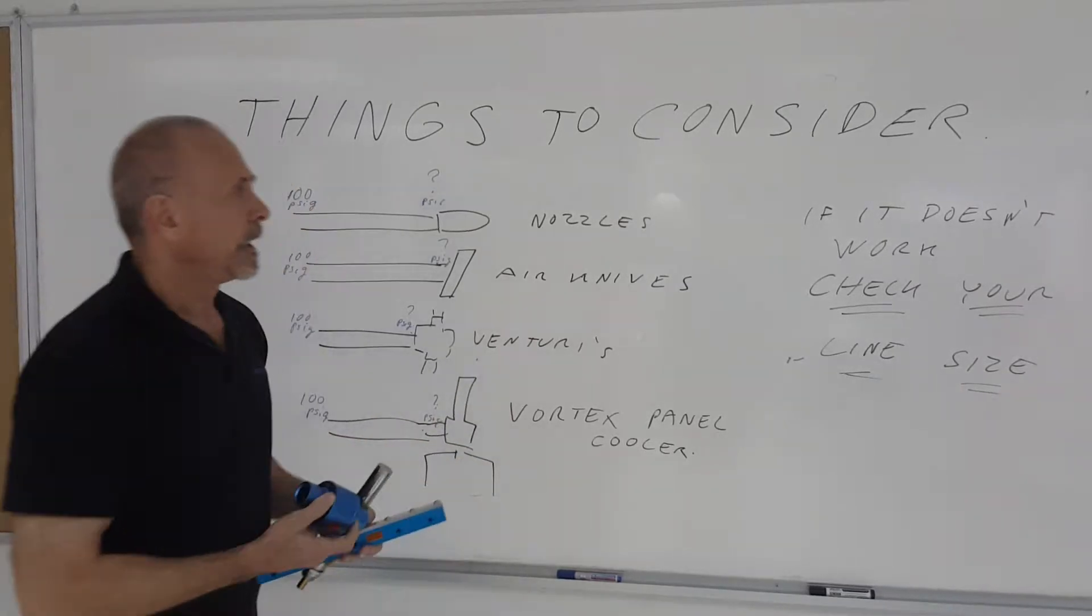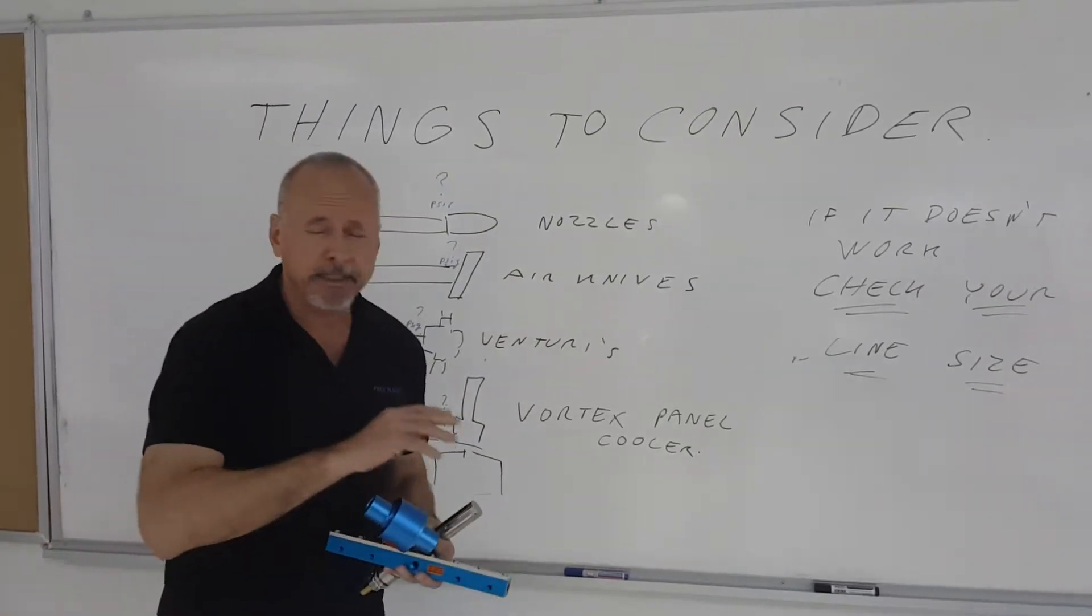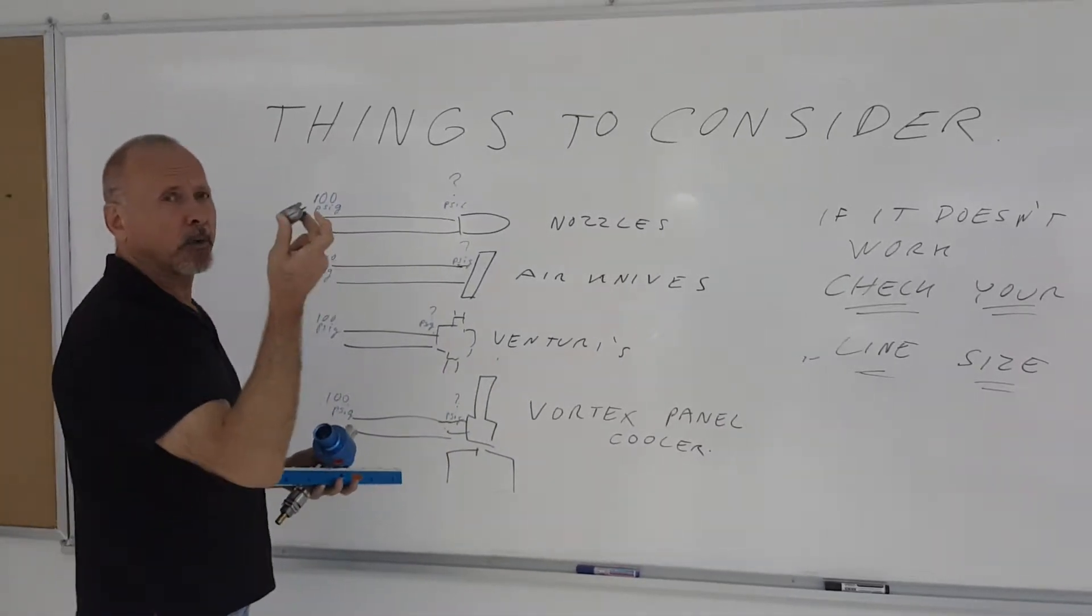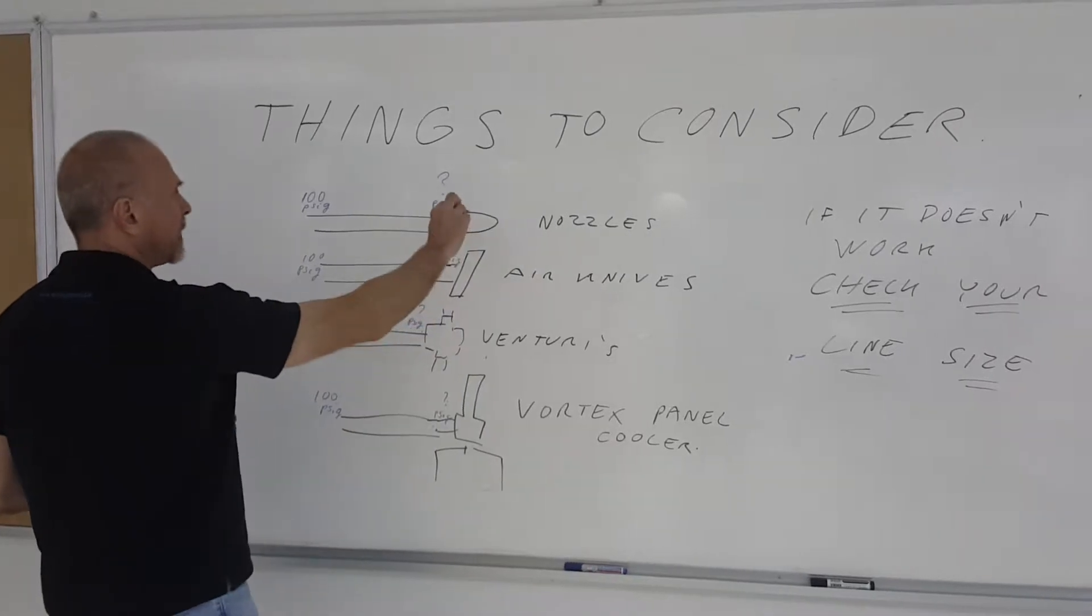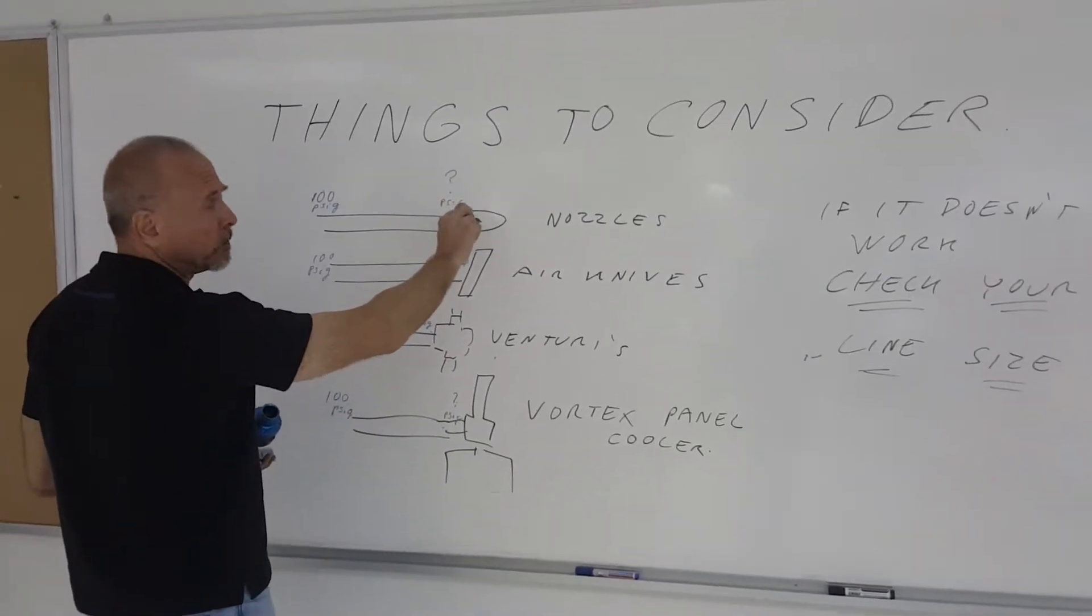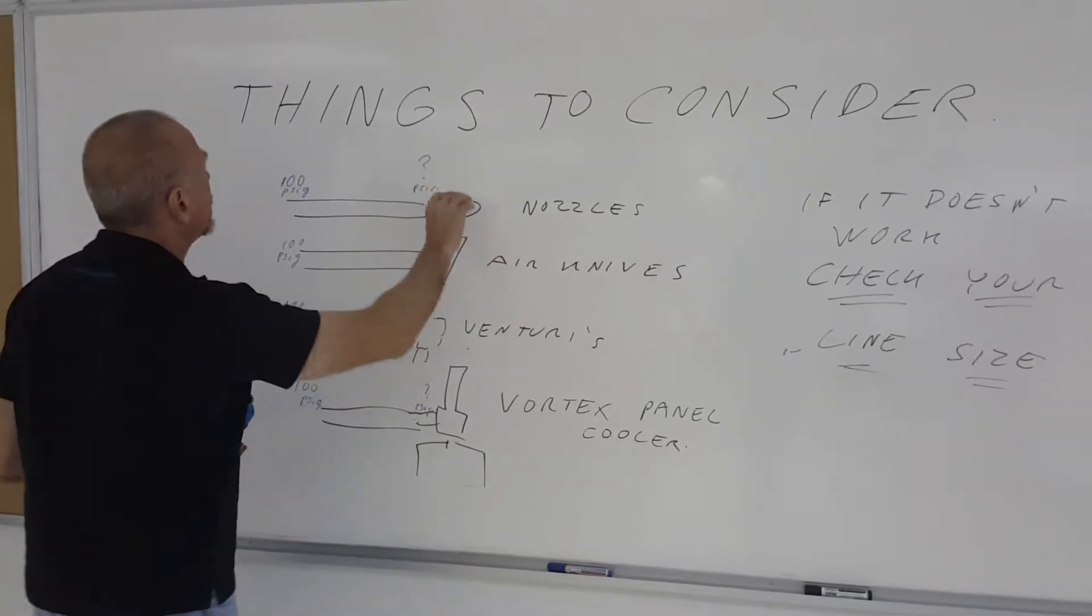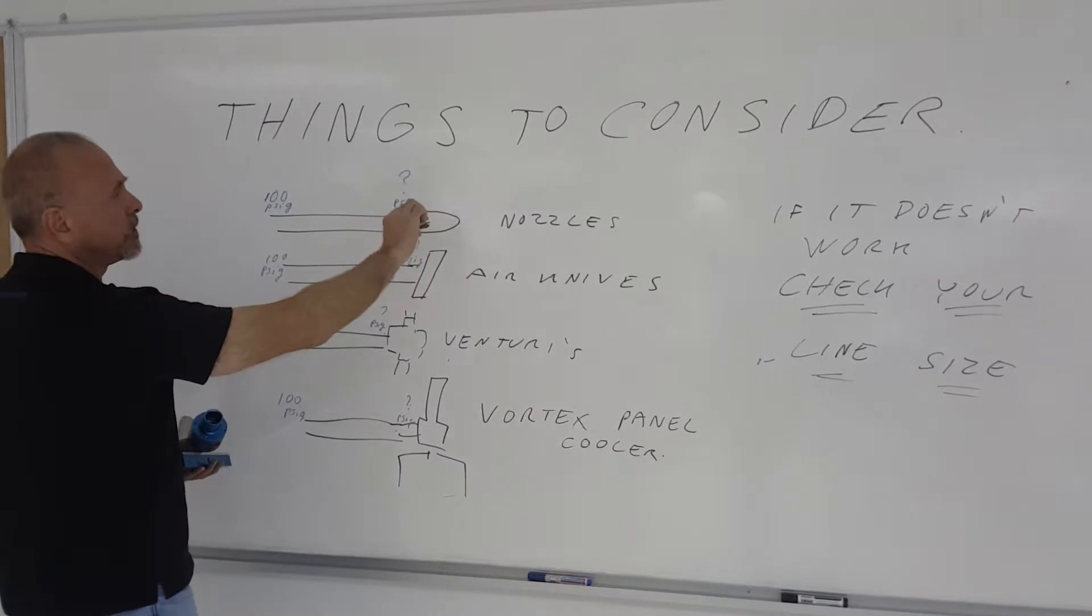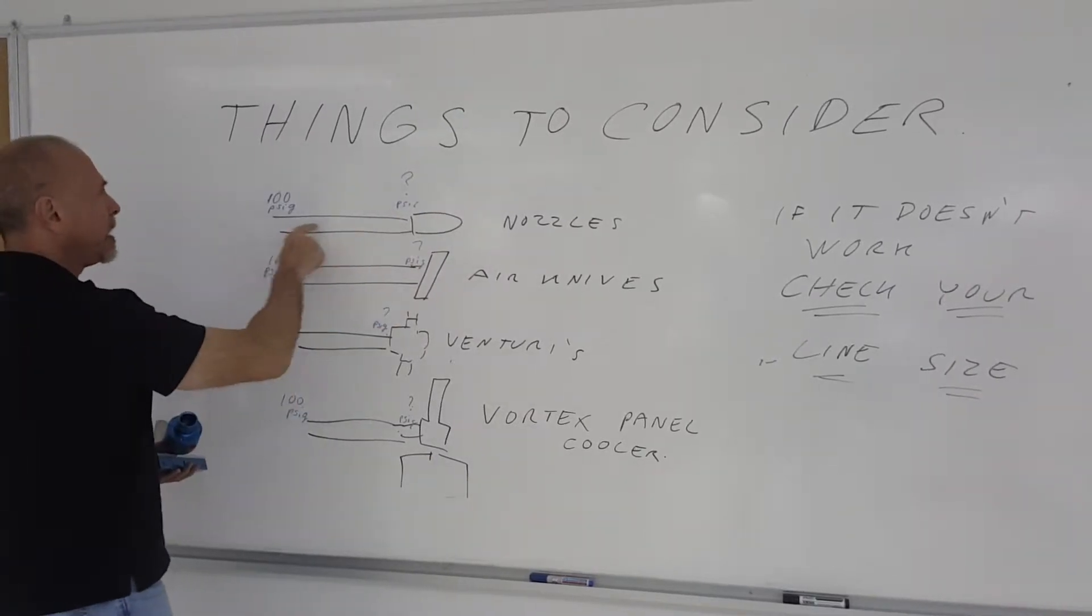And it all comes down nine out of ten times to one thing. I have in my hand an air blow-off nozzle. If I hook that air blow-off nozzle on the end of a pipe, hose, tube, whatever - I hook it up to that air that compressor's coming along - that supply to that nozzle, depending on the size of that tube or pipe, is going to be a pressure loss.